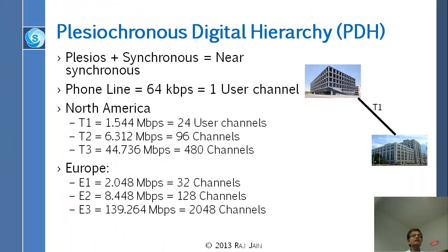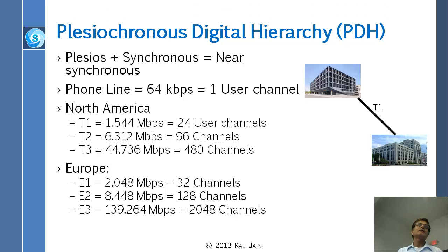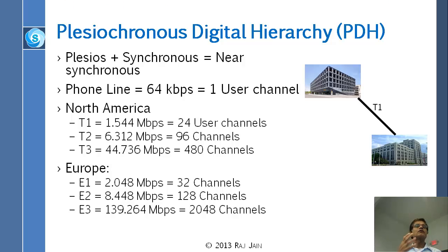So let's start with PDH. The reason we start with PDH is because PDH came first — this is the oldest technology around. Basically, in the beginning, everybody had a phone wire to their home going all the way to the telephone company's head office. And that wire ran at 64 kilobits. Why? Because they did some survey and found out that 4 kilohertz sound is reasonable, and for 4 kilohertz, you have to take 8,000 samples per second.